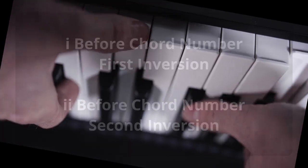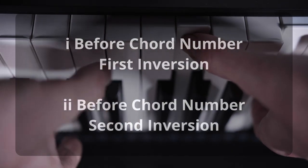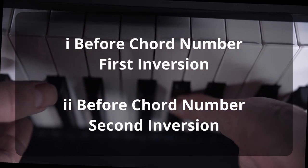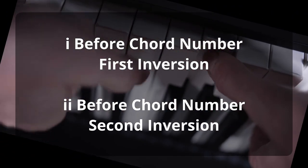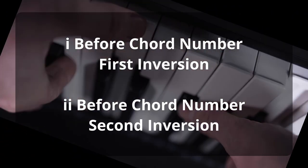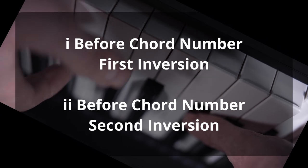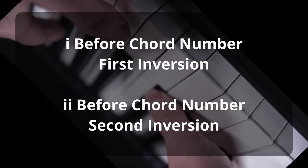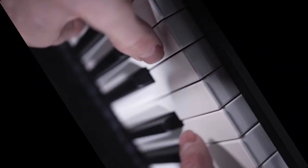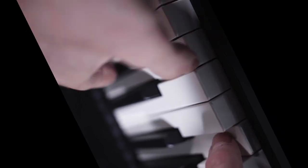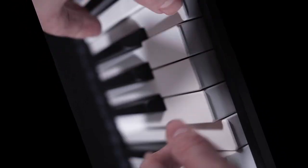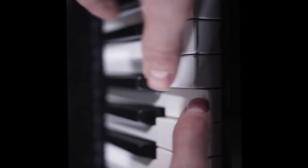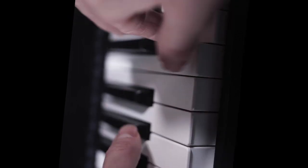When using the Roman numeral system for chords, a small 'i' is placed before the chord number to indicate a first inversion, and two small 'i's represent a second inversion. If you'd like a simple introduction to major chord inversions, then check out our how-to-play all major chord inversions video.